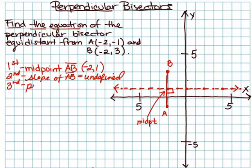So the third step is the slope of a perpendicular is the opposite of undefined, which would be 0. Now, this one fits a little bit differently than other ones.